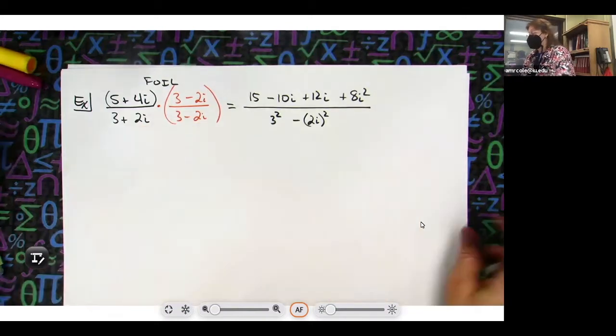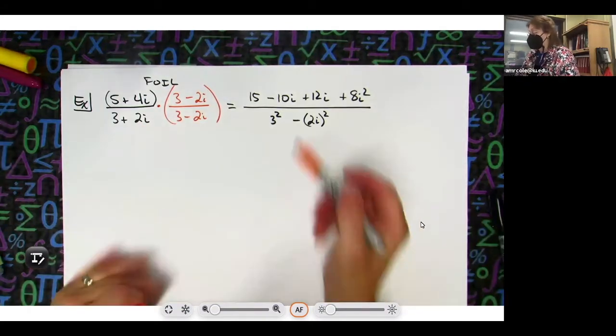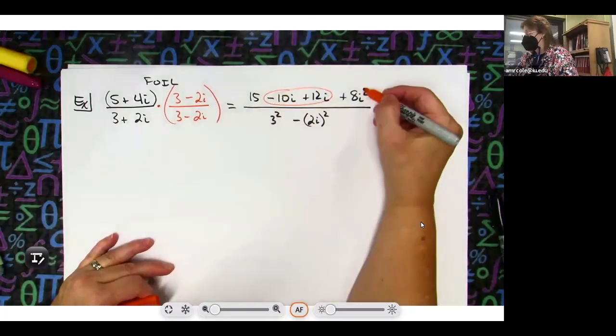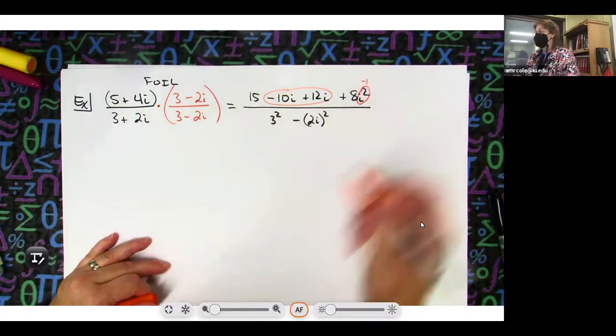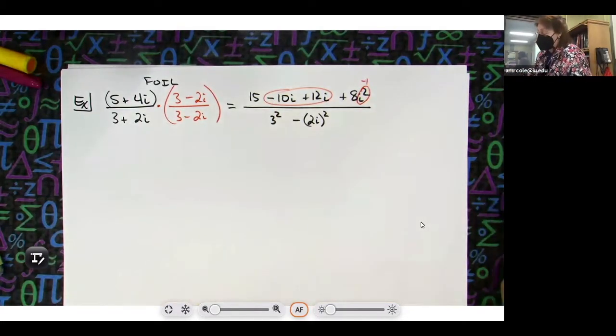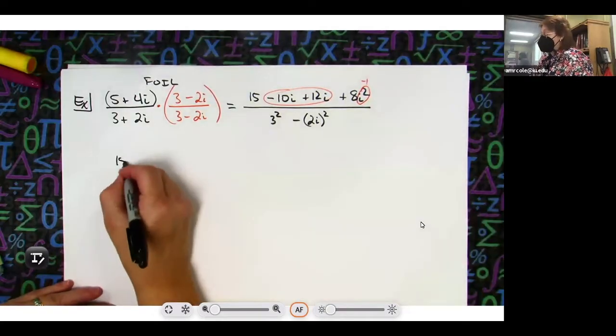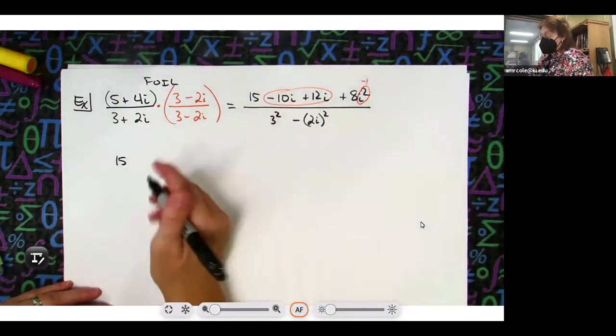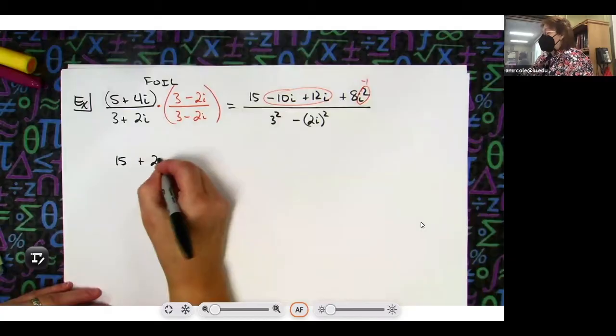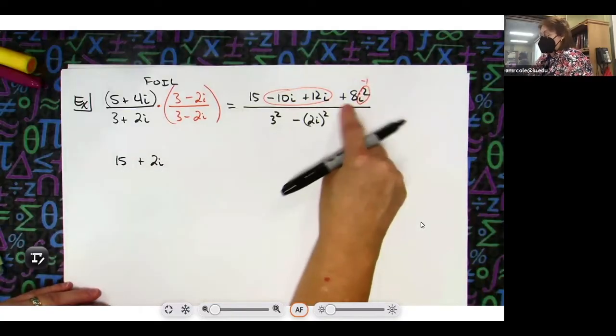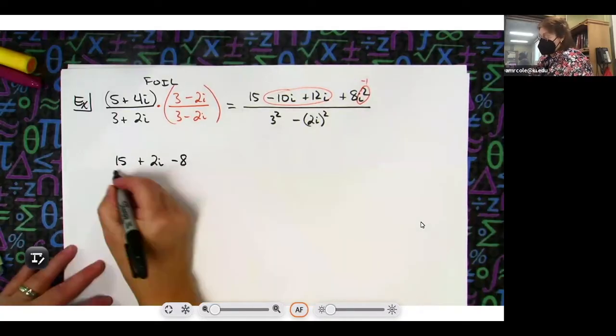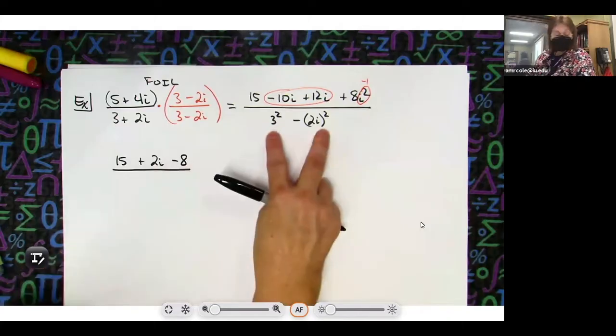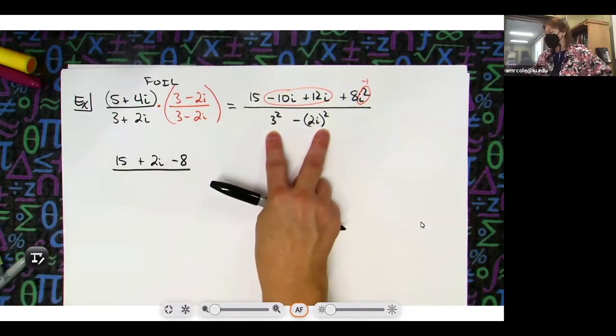On the top I've got some like terms, these two are like, and I know this means negative 1. So I can simplify to 15 and then plus 2i. 8 times that negative 1 is going to be a minus 8.